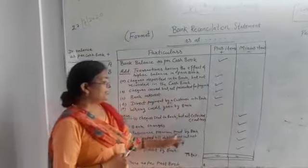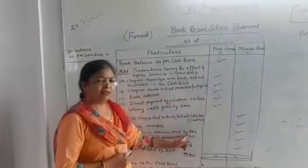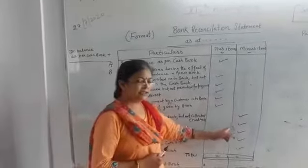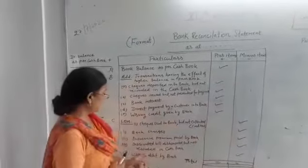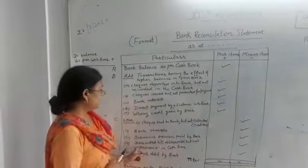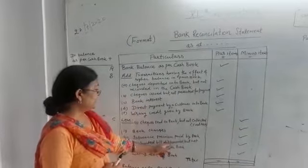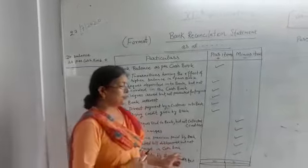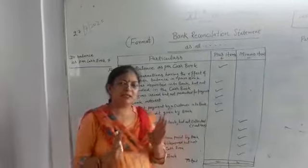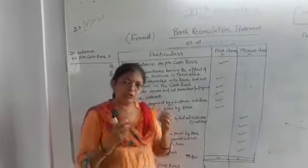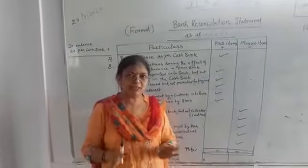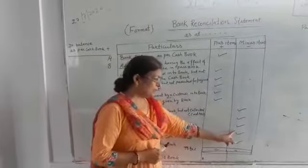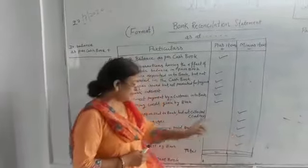Since bank charges were applied, you also need to minus them from the cash book. Insurance premium paid by bank — the bank paid the premium, so minus it from the cash book. Bill discounted but dishonored — a bill we had discounted from the bank got dishonored, got cancelled, so this also needs to be minused from the cash book.